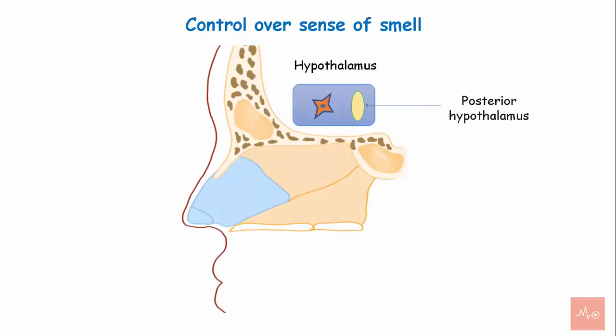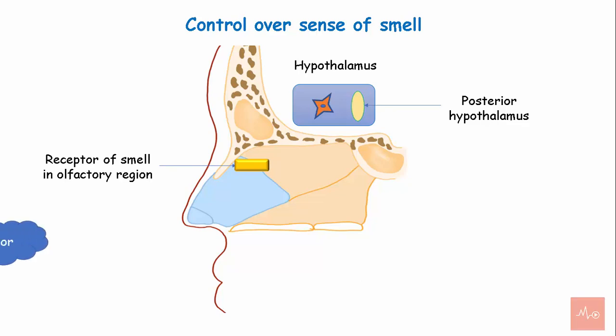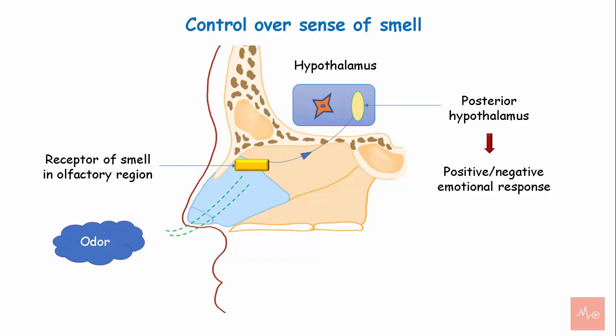Control over the sense of smell. The posterior hypothalamus has some control over the sense of smell. Receptors of smell are located in the olfactory region of the nose, which senses odor and sends a signal to the hypothalamus through the olfactory bulb. The hypothalamus then initiates a positive or negative emotional response to the odor.